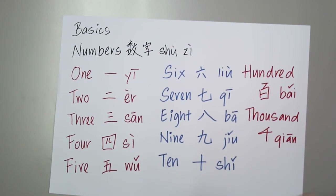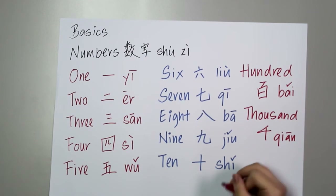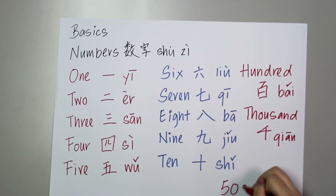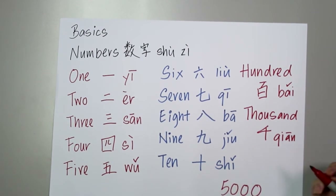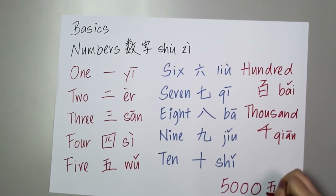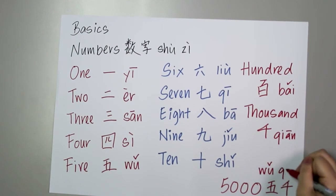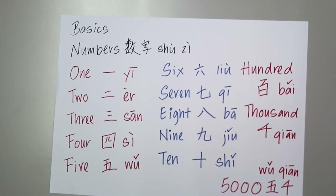Let's have a small test. What about five thousand? Five thousand is wu qian. So it's pretty easy, right?